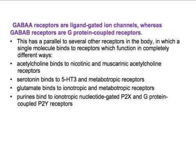In several systems, a single molecule binds to receptors that function in completely different ways. Acetylcholine binds to nicotinic and muscarinic acetylcholine receptors. Serotonin binds to 5-HT3 and metabotropic receptors. Glutamate binds to ionotropic and metabotropic receptors. Purines bind to ionotropic nucleotide-gated P2X and G protein-coupled P2Y receptors.